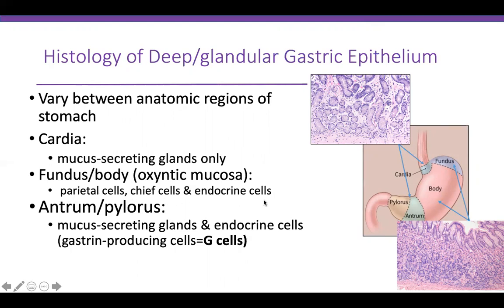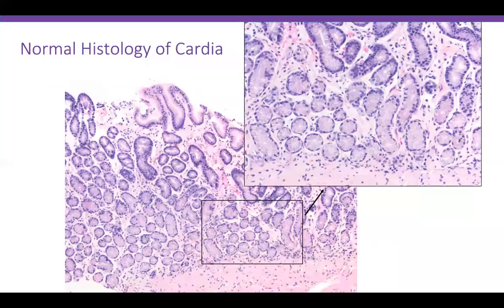This is the normal histology of the cardia. It is mucus-secreting lined — you have your surface gastric foveolar epithelium, and the deep glands are mucus-secreting. As you can see at high power, the cells have clear cytoplasm.